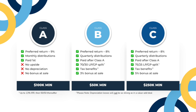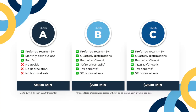Classes B and C have an LP-GP split. Class B has a 70-30 split, meaning 70% to you the LP and 30% to us the GP, up to a 13% IRR, and then 50-50 thereafter. Class C has a 75-25 split, meaning 75% of the profits to you the LP and 25% to us the GP, up until a 13% IRR, and then 50-50 thereafter.